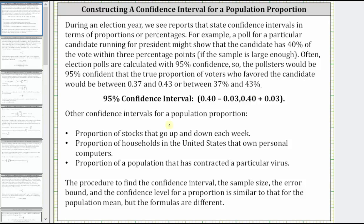Other confidence intervals for a population proportion might be the proportion or percent of stocks that go up and down each week, proportions of households in the US that own personal computers, as well as the proportion of a population that has contracted a particular virus.